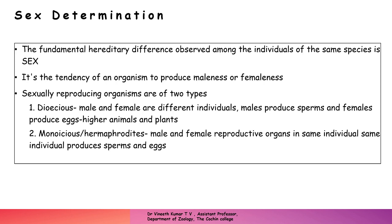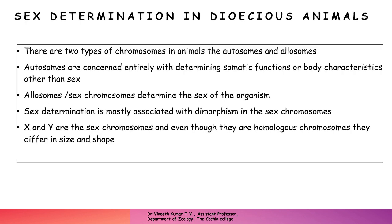In sexually reproducing organisms, there are two types of chromosomes present in animals. They are called autosomes as well as allosomes or sex chromosomes. Autosomes are entirely concerned with the somatic functions of the body — they determine body characters other than sex and do not have the capacity to determine whether the organism will be male or female. The allosomes or sex chromosomes are the chromosomes that determine the sex of an individual.